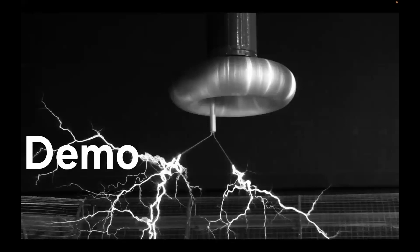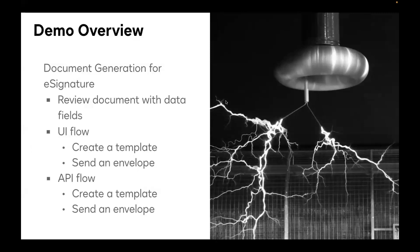Let me go ahead and share my screen. Hello everyone, my name is Carissa Jacobson, and in this demo I will show you how to use the document generation feature to send dynamically generated documents in a DocuSign envelope. I'll first show a closer look at the document with data fields that I'll be using in the demo, then go over how to set up a template and send an envelope using the DocuSign UI, and then show how to do the same thing in Bash with the DocuSign eSignature REST API — creating a template and sending an envelope with custom data for each data field defined in the template.